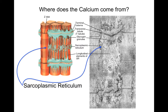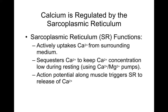Where does the calcium come from? It comes from the sarcoplasmic reticulum, which is related to the endoplasmic reticulum of normal cells, but in muscle cells it's called the sarcoplasmic reticulum, and it sequesters calcium so that there is very little free-floating calcium in the cytosol. Its main functions are to actively uptake calcium from the cytosol — keeping the calcium concentration low during resting when we don't want muscles to contract — using calcium-magnesium pumps to do this.